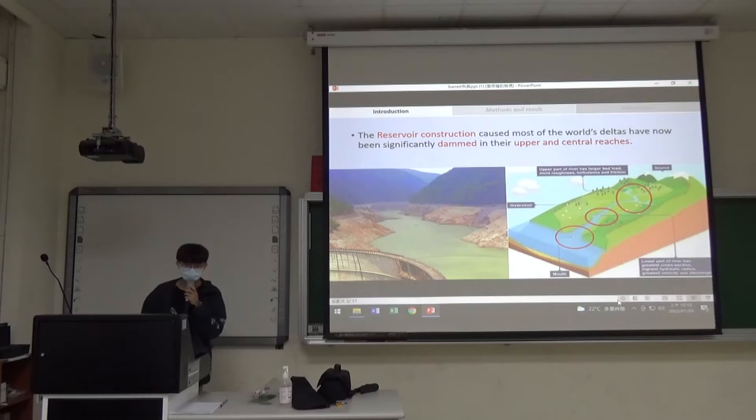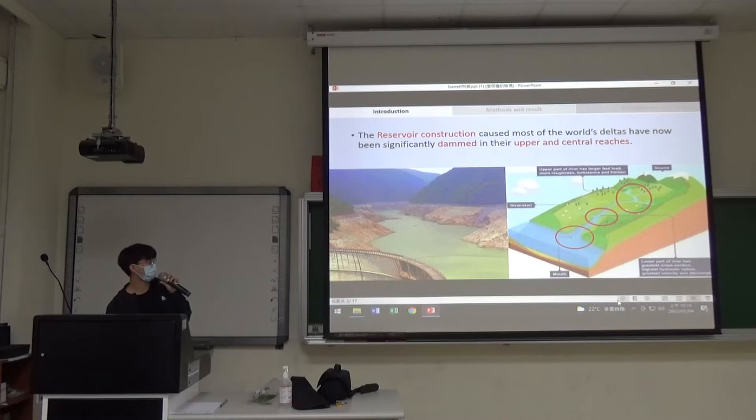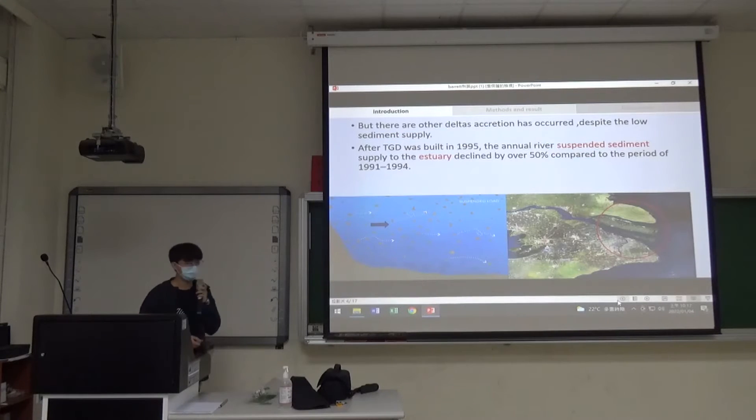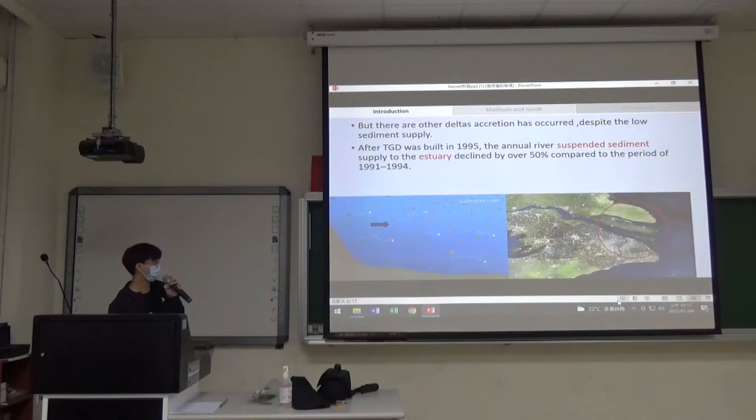Let's go to the introduction. Human interference frequently affects coastal areas. Reservoir congestion causes most of the world's deltas to be significantly degraded in their upper and central reaches. Here is a picture about reservoir congestion, showing the upper reaches, central reaches, and estuary. But research found out that some delta accretion has occurred despite low sediment supply.